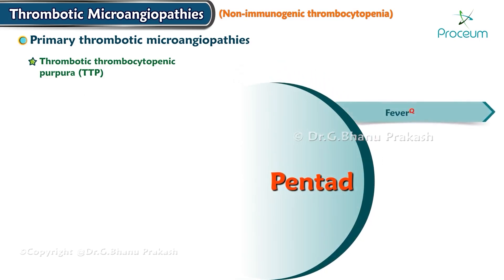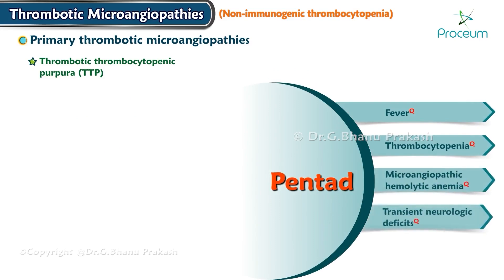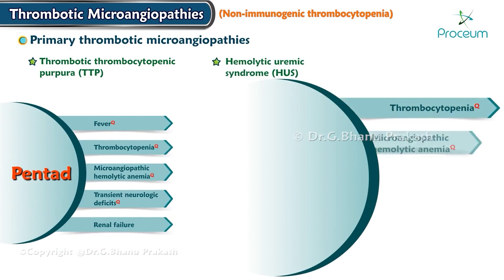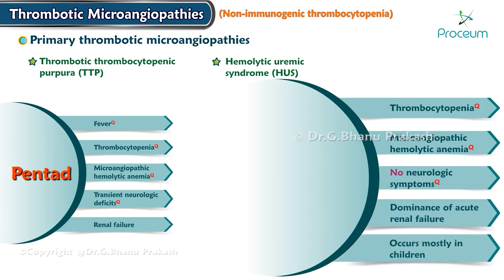TTP is diagnosed with a pentad of fever, thrombocytopenia, microangiopathic hemolytic anemia, transient neurologic deficits, and renal failure. HUS can be diagnosed when patients present with thrombocytopenia, microangiopathic hemolytic anemia, no neurologic symptoms, and dominance of acute renal failure; HUS occurs most commonly in children. The term hemolytic uremic syndrome is now replaced by IgA vasculitis, as the predominant insult in causation of this syndrome is noted to be IgA-mediated vasculitis.